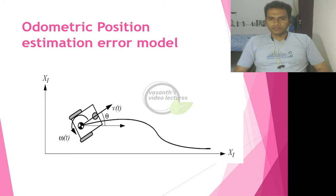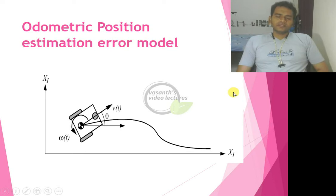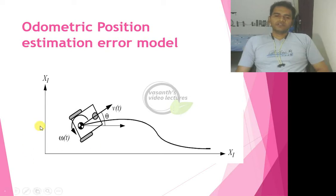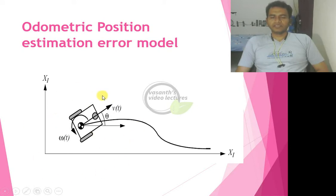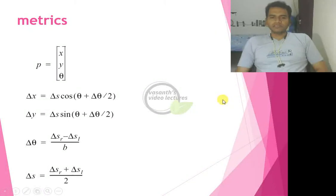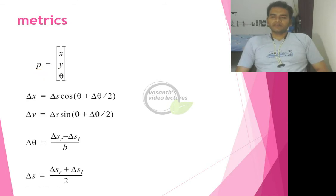Let us discuss odometric position estimation and its error model. We assume the position is represented by three terms: x, y, and theta, where theta is the angular orientation of the robot moving in a fixed frame. In matrix form, these three terms give us the position of the robot, and we need to estimate this position p.